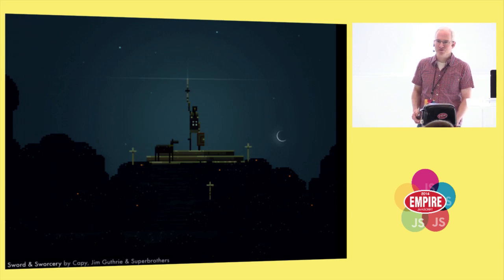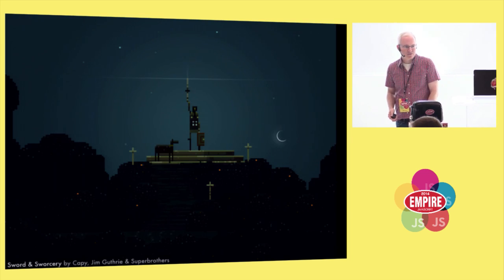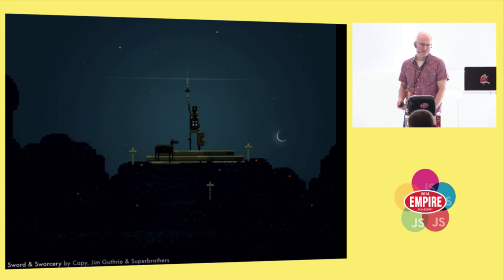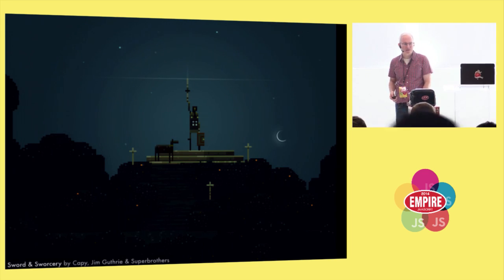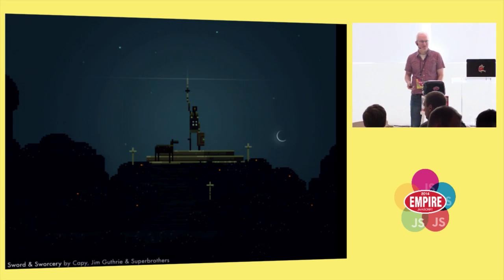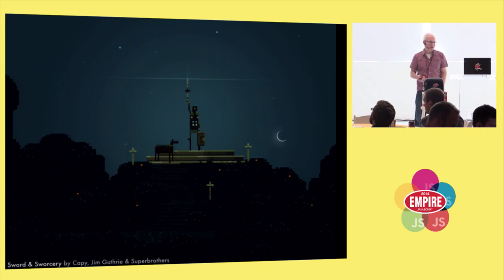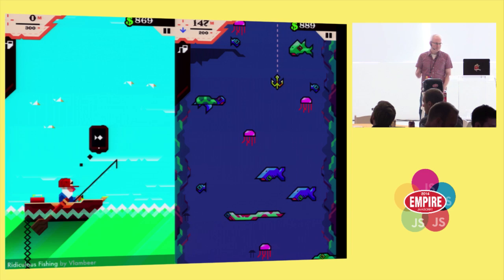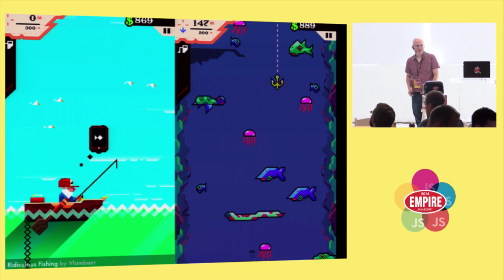Let's look at some modern examples of the 8-bit pixel art style. This is Sword and Sorcery and it was released in 2011. I think by 2013 it sold 1.5 million copies. If you want an example of cinematic pixel art, this is it. This is one of my all-time favorite games. This is Ridiculous Fishing. Last year it won iPhone's game of the year.